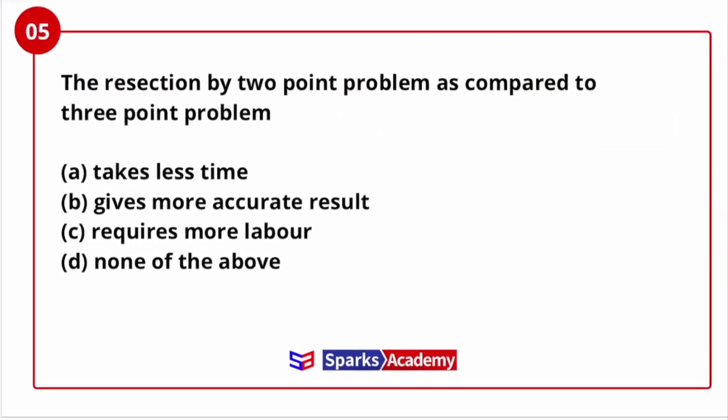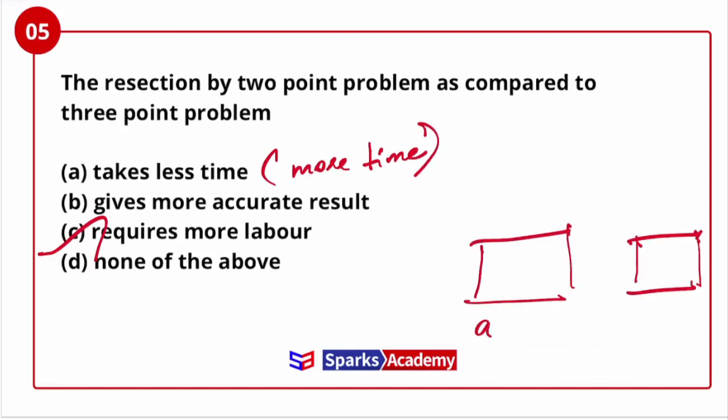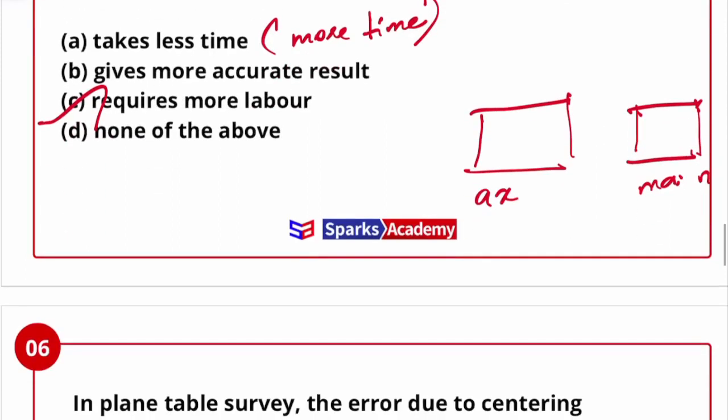Next question: the two-point problem as compared to the three-point problem — does it take less time, give more accurate results, or require more labor? The major difference is that the two-point problem requires more labor and more time as well. It is a very tedious and laborious process. So the option is C — it requires more labor.